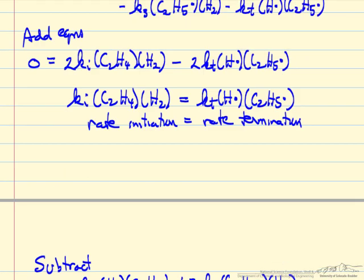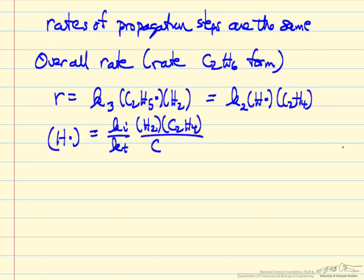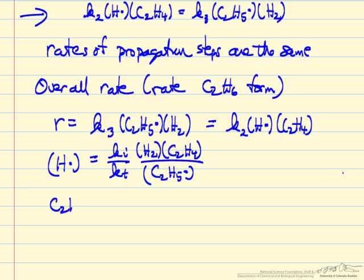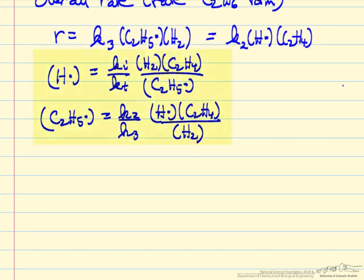We use the condition that the rate of initiation equals the rate of termination. Rearranging that gives the concentration of hydrogen atoms in terms of K_i, K_T, [H2], [C2H4], and [C2H5·]. Then we use the equal propagation rates equation to write the C2H5· concentration in terms of the hydrogen atom concentration. Substituting this back allows us to solve for the hydrogen atom concentration, giving it in terms of these rate constants and measurable concentrations.